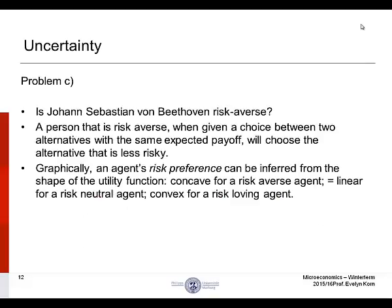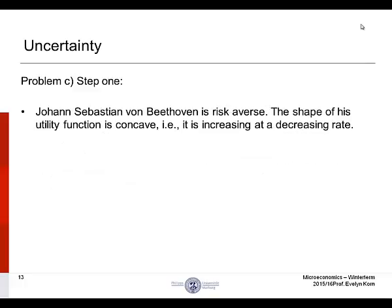Back to the problem. Part C: is Johann Sebastian von Beethoven risk-averse? A person that is risk-averse, when given a choice between two alternatives with the same expected payoff, chooses the alternative that is less risky. It's important to remember that simply because a person avoids a lottery, it does not mean that a person is risk-averse. Graphically, an agent's risk preference can be inferred from the shape of the utility function. Problem C, Step 1: Johann Sebastian von Beethoven is risk-averse. The shape of his utility function is concave, that is to say, it is decreasing at a decreasing rate.